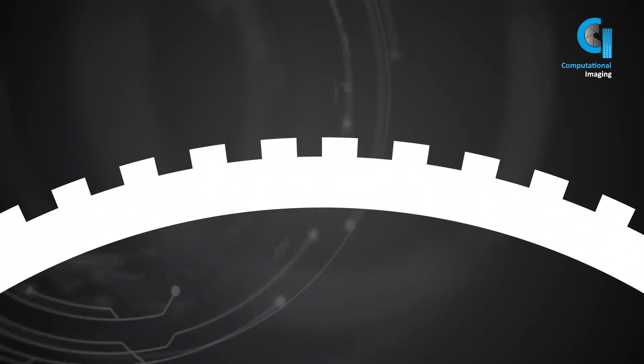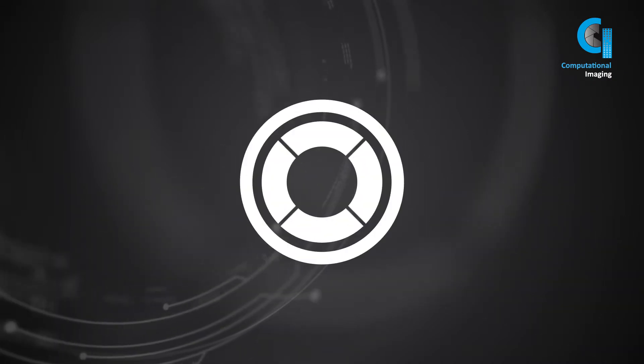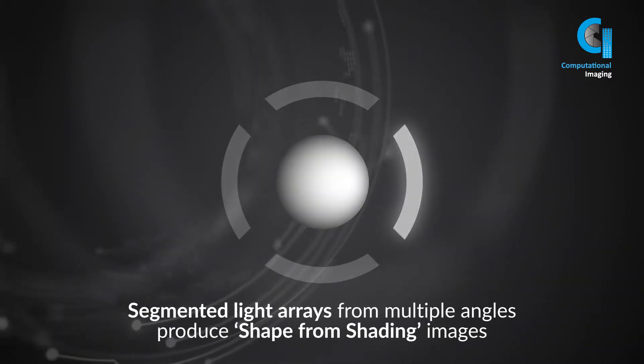Photometric stereo allows the user to separate the shape of an object from its 2D texture. Its primary purpose is to accentuate the three-dimensional surface structure of an object. It works by firing segmented light arrays from multiple angles and then processing the resulting shadow information in a process called shape from shading.